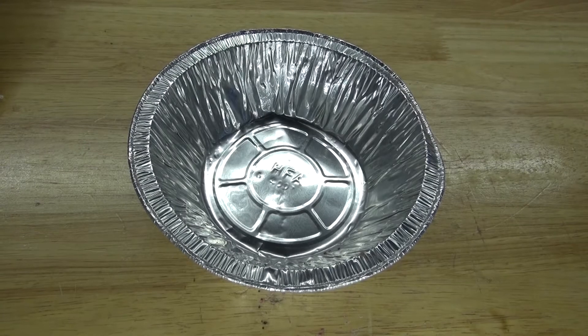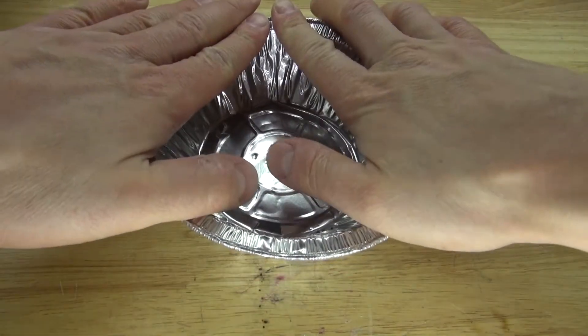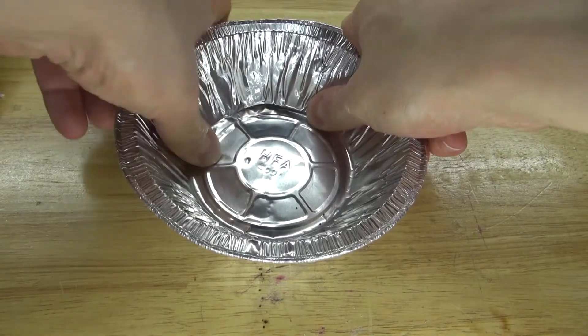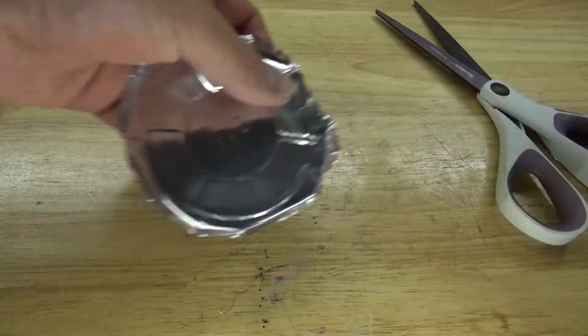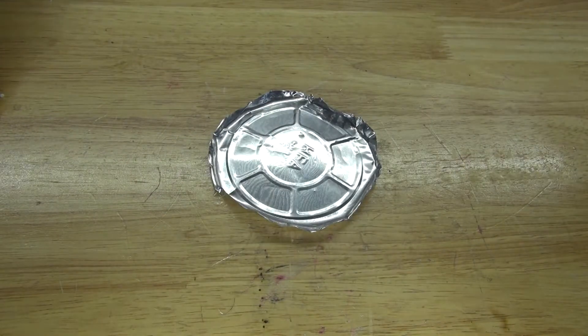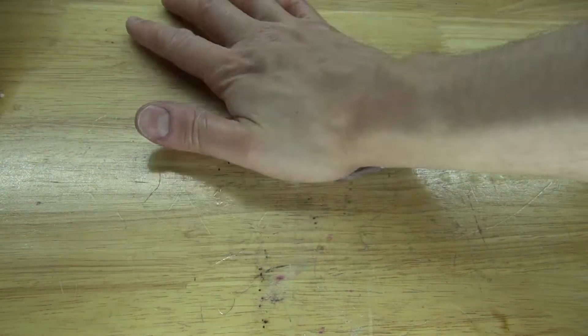First I'm going to take this aluminum cake tray, stretch it out and flatten it. So then that way I can be able to cut off this bottom. Place it on the workbench and flatten it out the best you can.